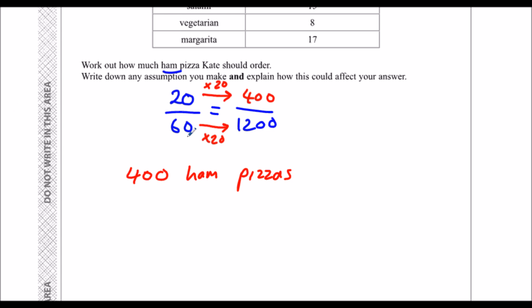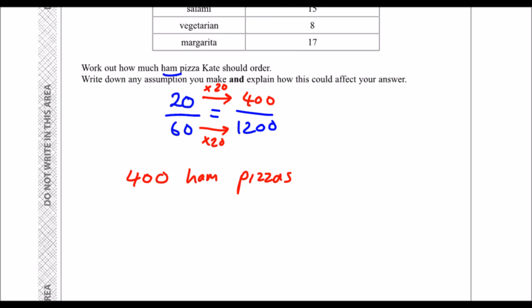We could have also done that by saying it's a third. So one third of 1,200. Same thing, 400 ham pizzas.